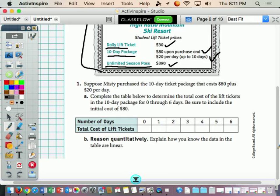So our total cost. Since it says it's $80 upon purchase, that means when she buys it, she's automatically paying $80. So even though she hasn't skied on day zero, she's paying $80. Day one is going to be $100, and the reason it's $100 is because it's $80 for the first time she bought it and then $20 for her first day. On her second day, we're going to go up another $20 because each day is $20. Then we're going to go up $20 again and again and again so we get to day six.